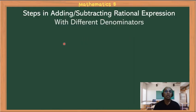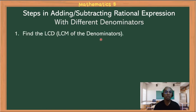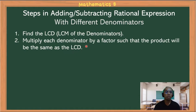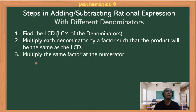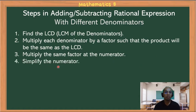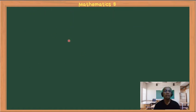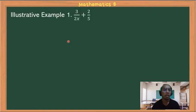Steps for adding and subtracting rational expressions with different denominators: first, find the LCD or LCM of the denominators. Then multiply each denominator by a factor so the product equals the LCD. Multiply that same factor in the numerator — because we are rationalizing. Finally, simplify the numerator and copy the denominator.